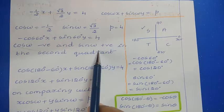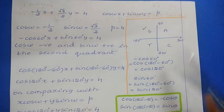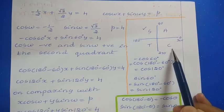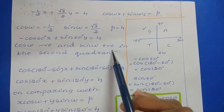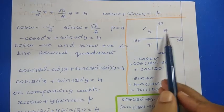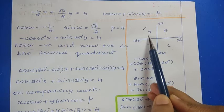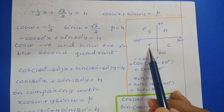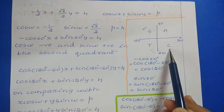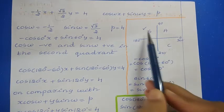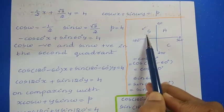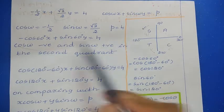Using the quadrant rule: in the first quadrant all values are positive — not applicable. In the second quadrant sin is positive and cos is negative — this matches our values. In the third quadrant both sin and cos are negative — not applicable. In the fourth quadrant cos is positive and sin is negative — not applicable. So we use the second quadrant and represent 60° as 180° minus 60°.